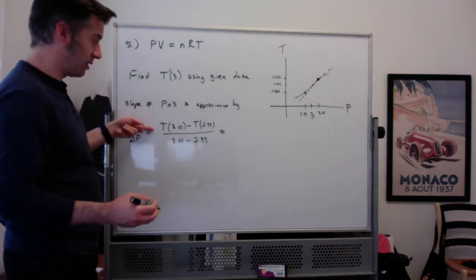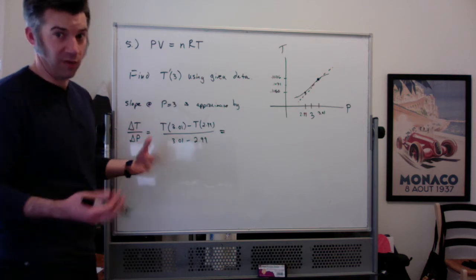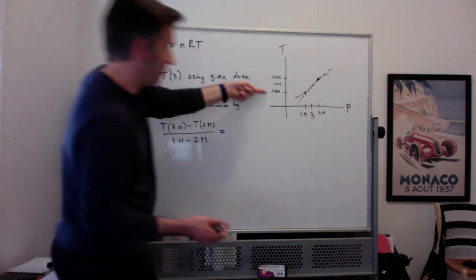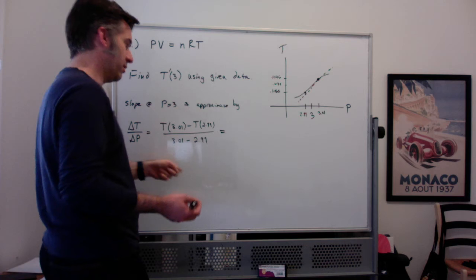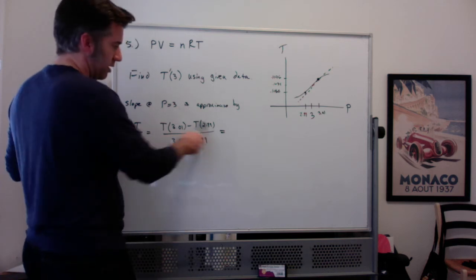So we're going to do the difference in the T values divided by the difference in the P values, or in other words, the rise from here to here over the run from here to here. Right, so it's here to here, here to here.